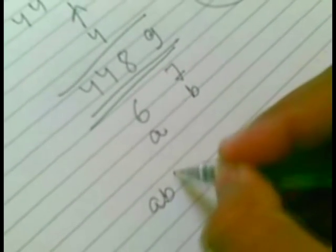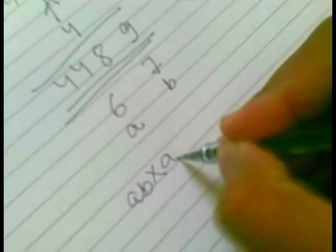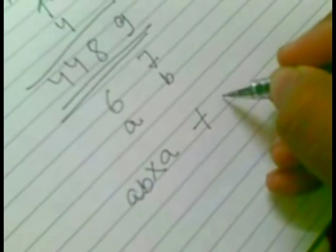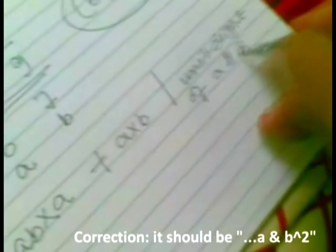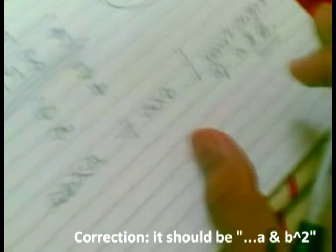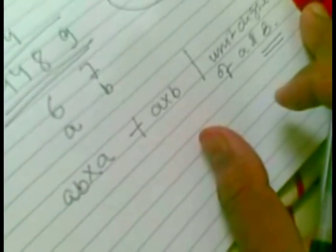I have multiplied a b to a plus a into b and the unit digit of a and b. So we could find any squares through this method.